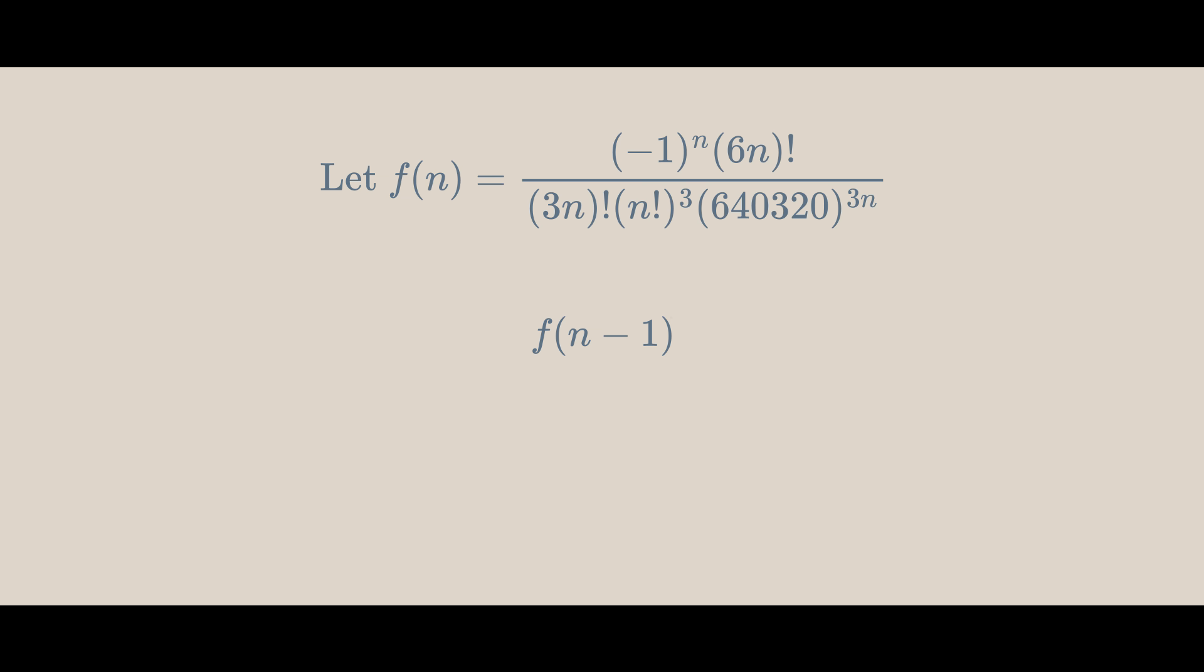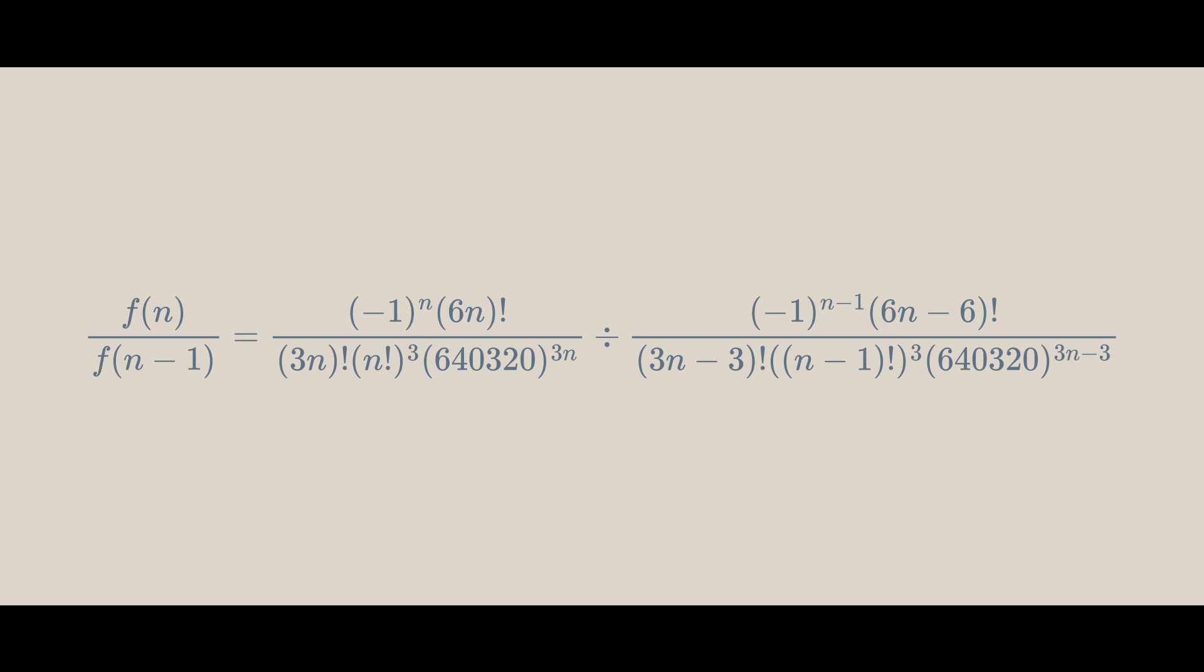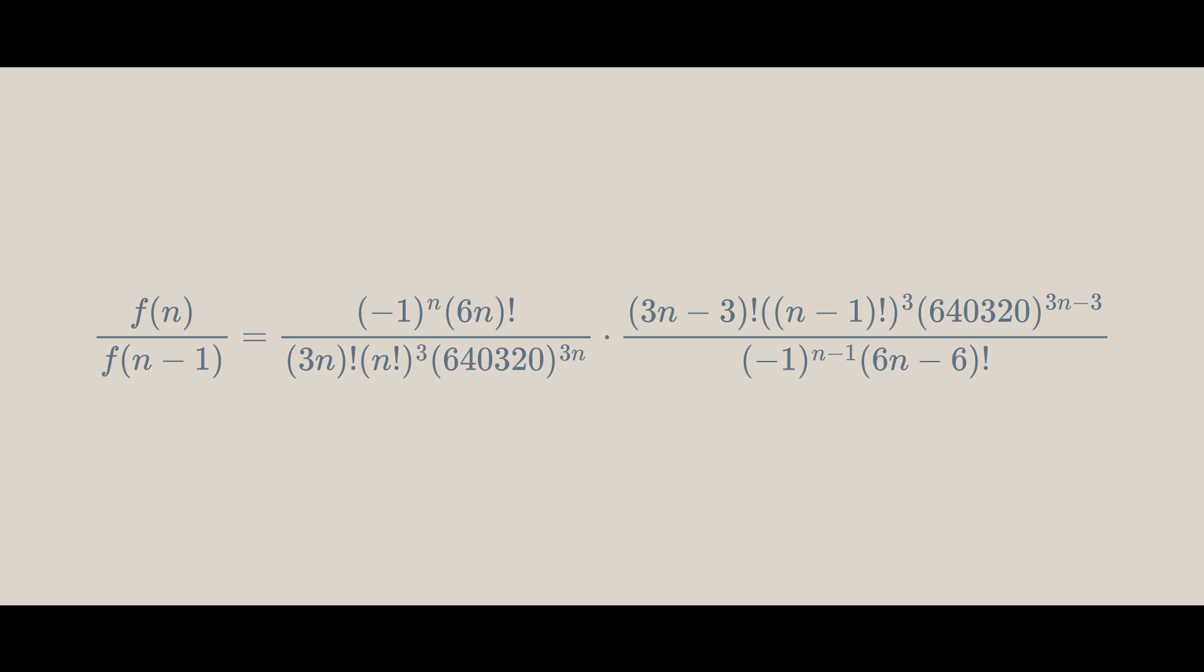Consider we had some f(j) and we wanted to multiply it by something to get f(j+1). To find this something, we would need to calculate f(j+1) over f(j), which is this. First, let's expand all the brackets. Next, divided by something is the same as multiplying by the reciprocal.